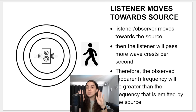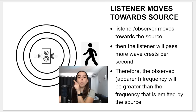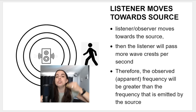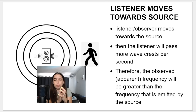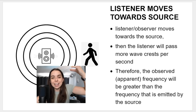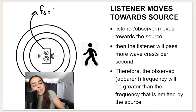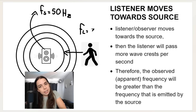The Doppler effect also works if the source is stationary and the listener moves. Let's pretend you're at a party — the speaker is stationary and making noise. If you, the listener, move towards the source, the faster you move, the more wave crests you pass per second. That means the wavelengths you perceive decrease, so the observed frequency will be bigger than the frequency emitted by the source — say, 75 hertz instead of 50 hertz.